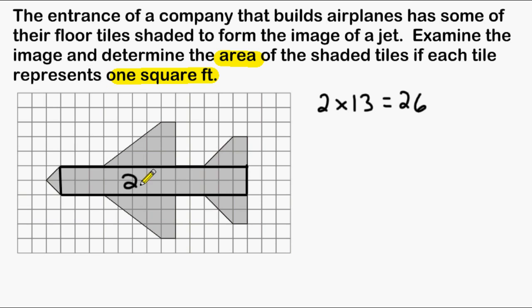A rectangle that is 2 by 13 units would give us an area of 26 square units. So I'm going to write the number 26 for this area that I have sectioned off here.